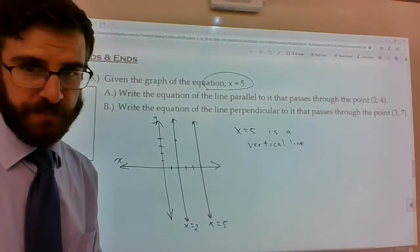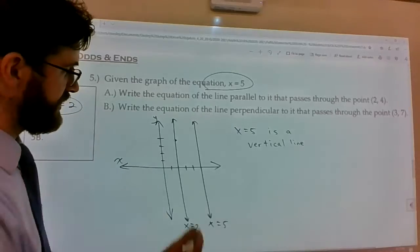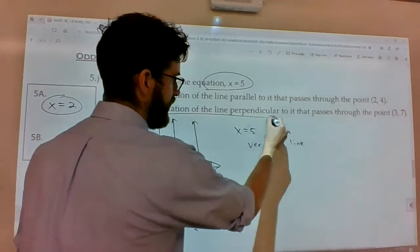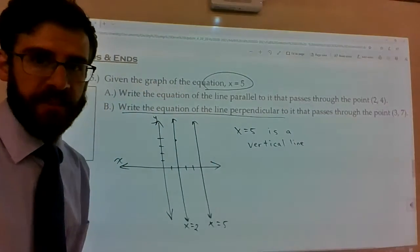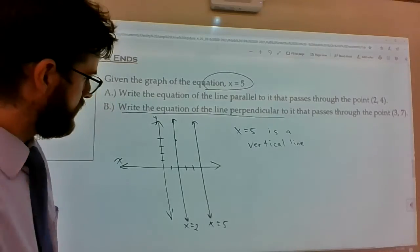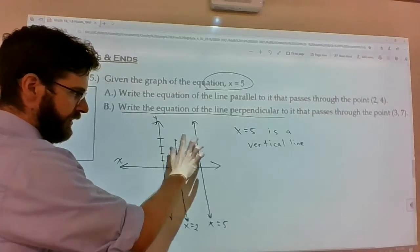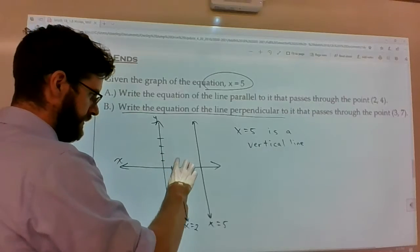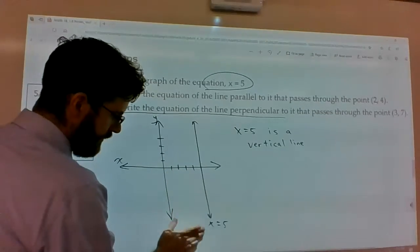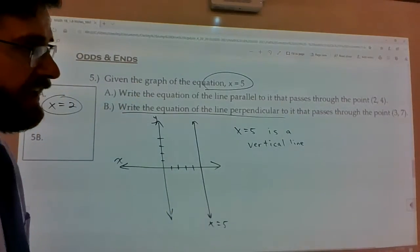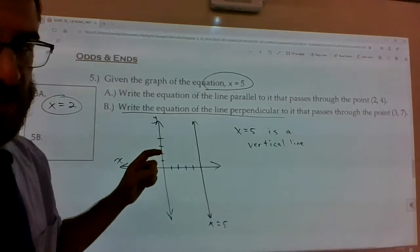Now sometimes this can be tricky. You can't just be like, oh, it's always x equals. Because sometimes you might be asked a question that's totally different than parallel. So I'm going to erase my x equals 2 here. It got us the answer we needed for 5a. 5b says it passes to the point 3, 7.